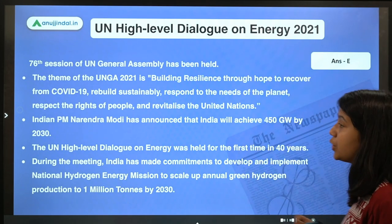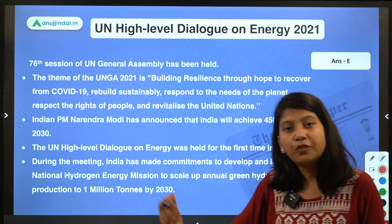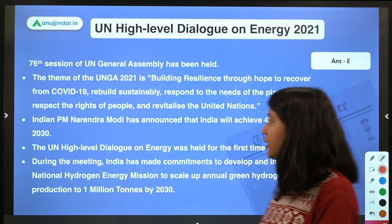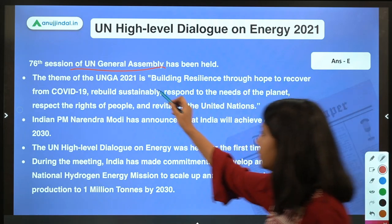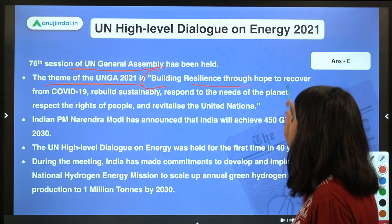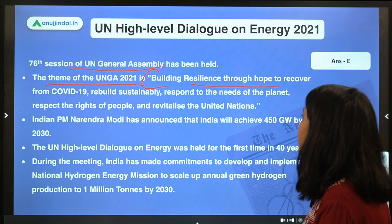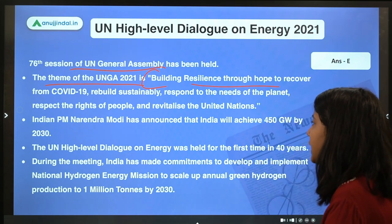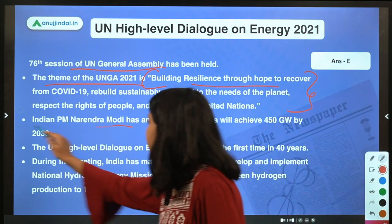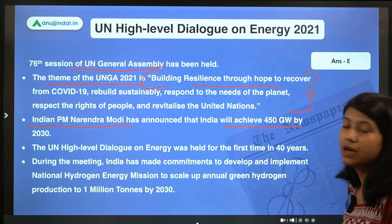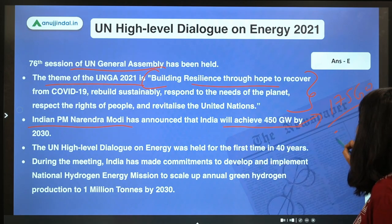During UNGA, Prime Minister Narendra Modi announced energy targets for India. The theme of UNGA 2021 was: 'Building Resilience through Hope — to recover from COVID-19, rebuild sustainability, respond to the needs of the planet, respect the rights of people, and revitalize the United Nations.' PM Modi announced India will achieve its 450 gigawatts renewable energy target by 2030 and is close to achieving the 175 gigawatts target by 2022.